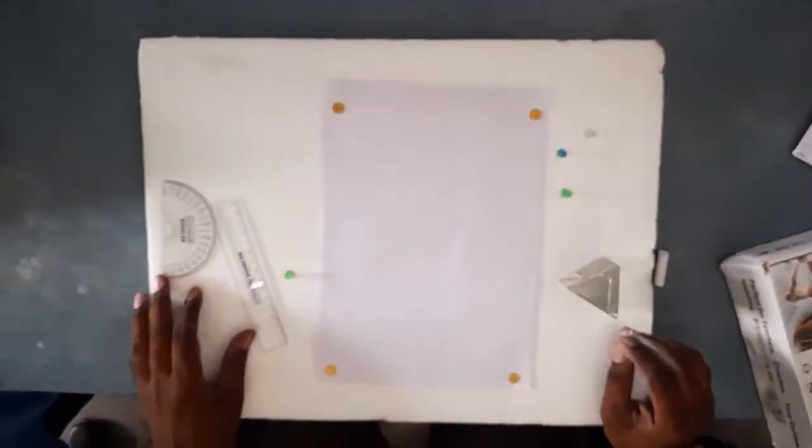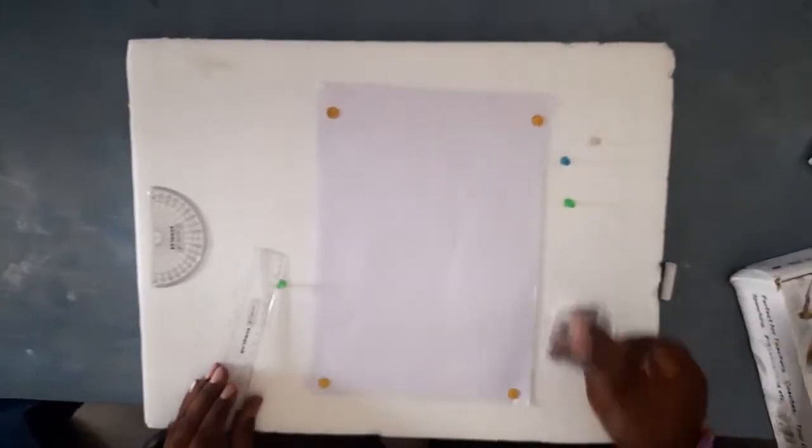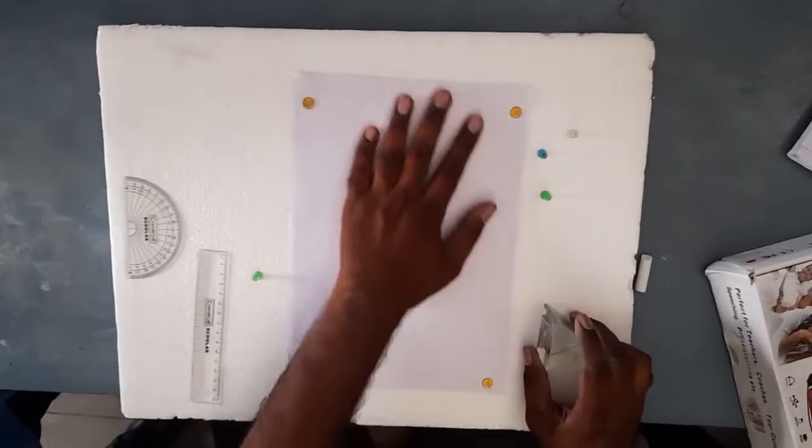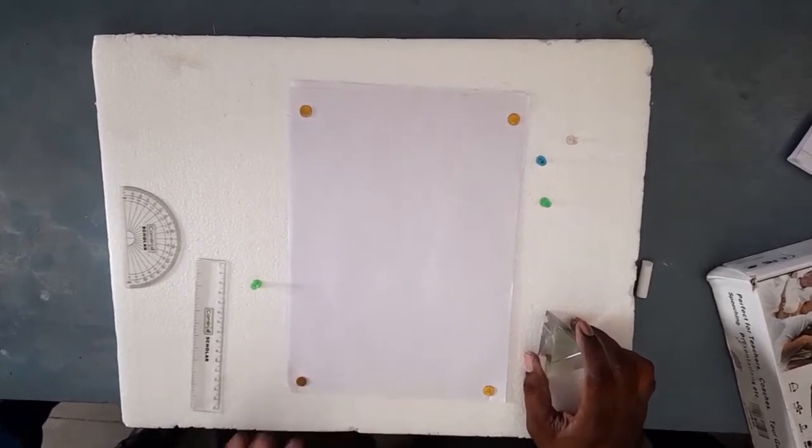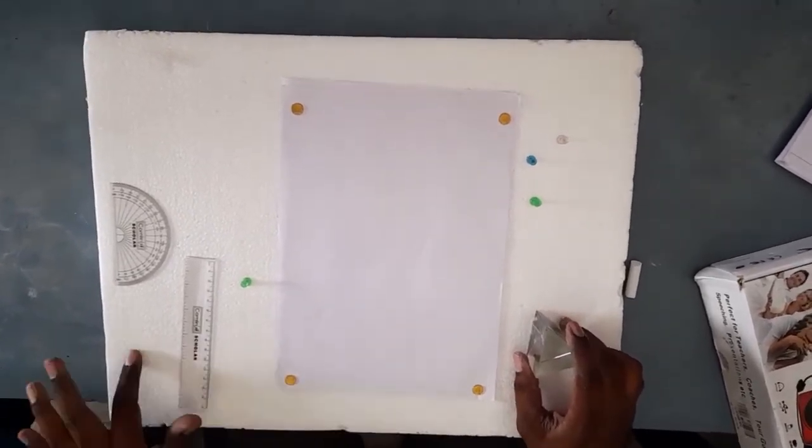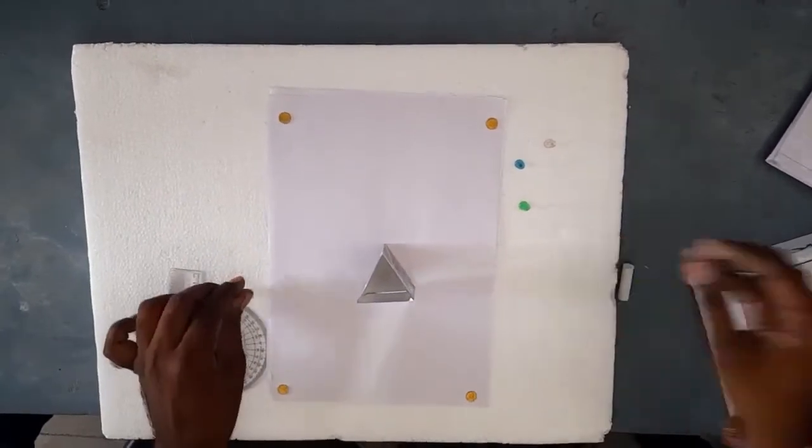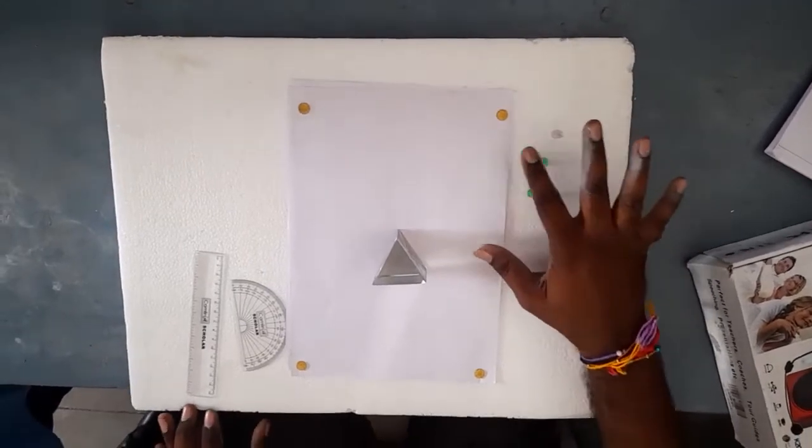The aim of this activity is to find the refractive index of the prism. To do this activity, we require a sheet of paper having 20 by 20 centimeters, a scale, pencil, protractor, and pins. Here I have taken four pins.